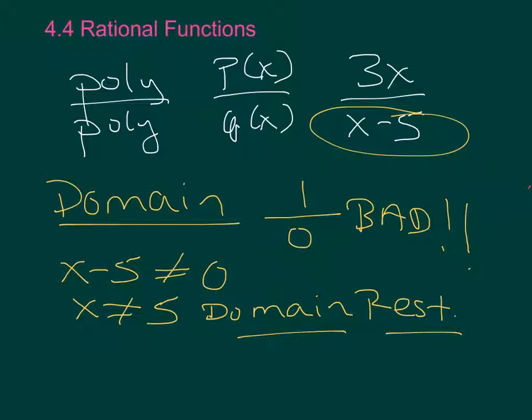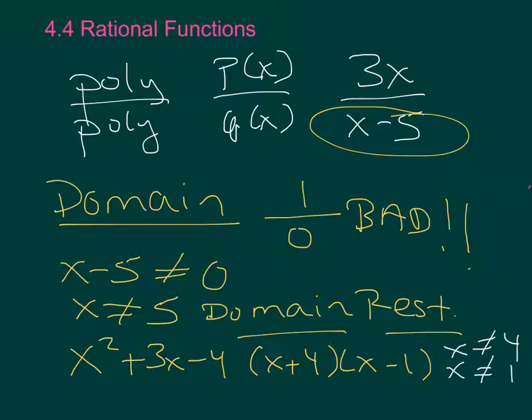Sometimes you might have to factor out that denominator because my denominator could be something like x squared plus 3x minus 4, in which case I would have to factor it out to x plus 4 times x minus 1. So x cannot equal negative 4, and x cannot equal positive 1. This is my domain restriction.